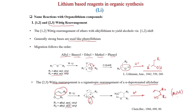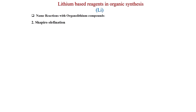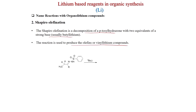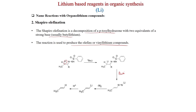Shapiro olefination: decomposition of a tosylhydrazone with 2 equivalents of strong base (usually n-BuLi). Both protons are deprotonated by n-BuLi; after removal of the sulfonyl group and nitrogen extrusion, the vinyl lithium species is generated. Aqueous workup gives the alkene; treatment with an electrophile gives the substituted olefin.